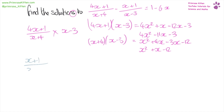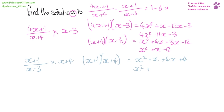So we have x plus one over x minus three times what's on the bottom on the other side, so x plus four, giving us x plus one times x plus four, giving us x squared plus x plus four x plus four — that makes x squared plus five x plus four. Then we have x minus three times x plus four giving us x squared minus three x plus four x minus 12, which tidies up to x squared plus x minus 12.